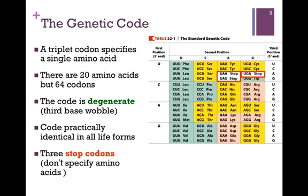That is, multiple codons may specify the same amino acid. In this table containing the standard genetic code, if you look at the lower left, for the codons specifying the amino acid valine, we notice that the first two bases are GU. That third base may be any of the four bases and still specify the same amino acid valine, so long as the first two bases are G and U. This is the third base wobble.